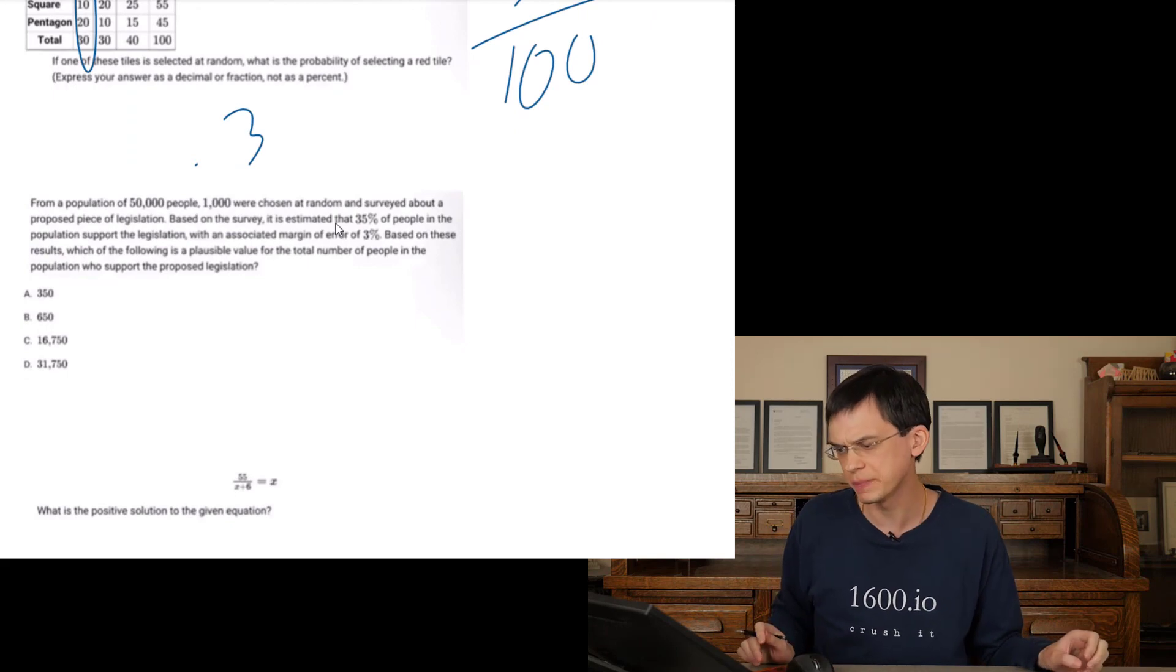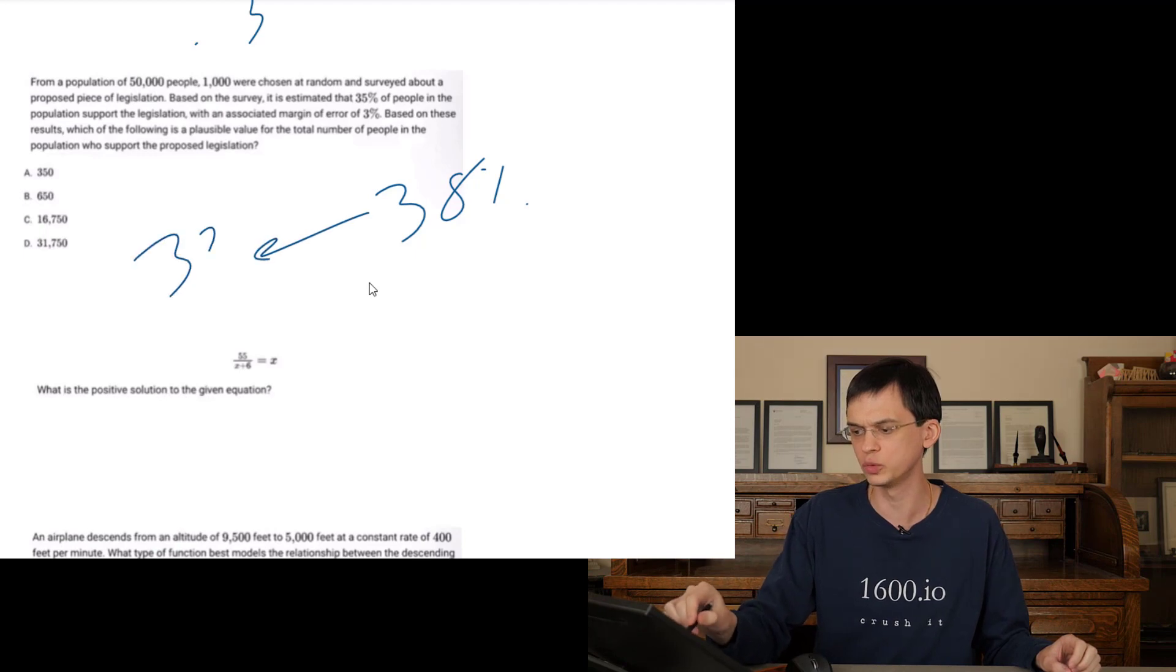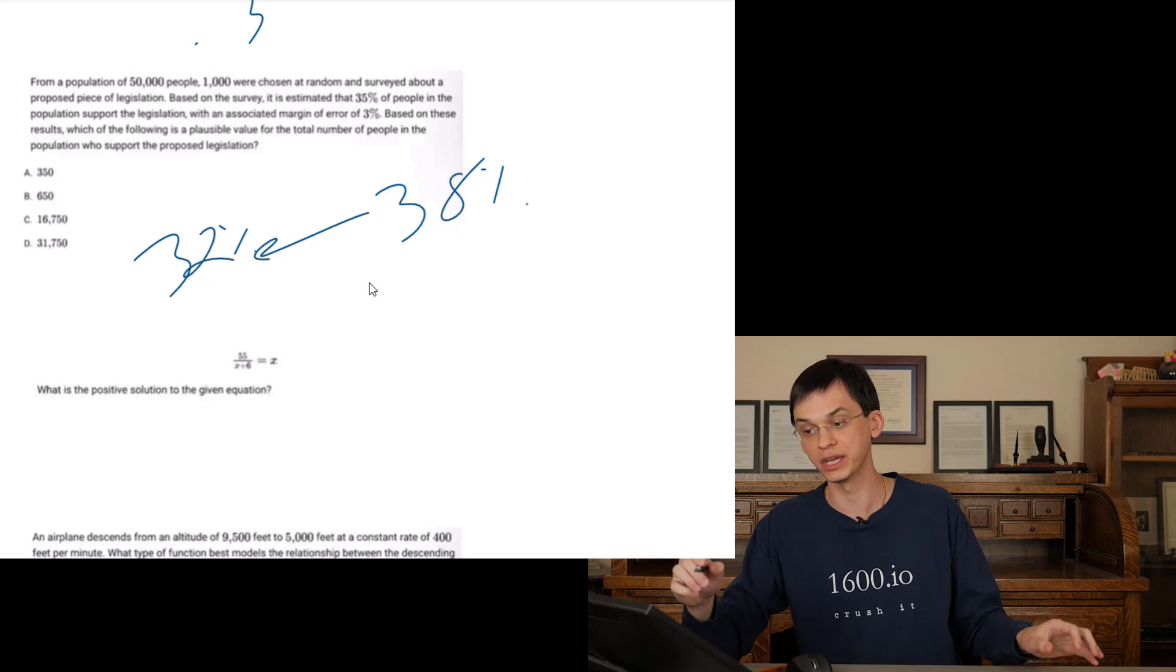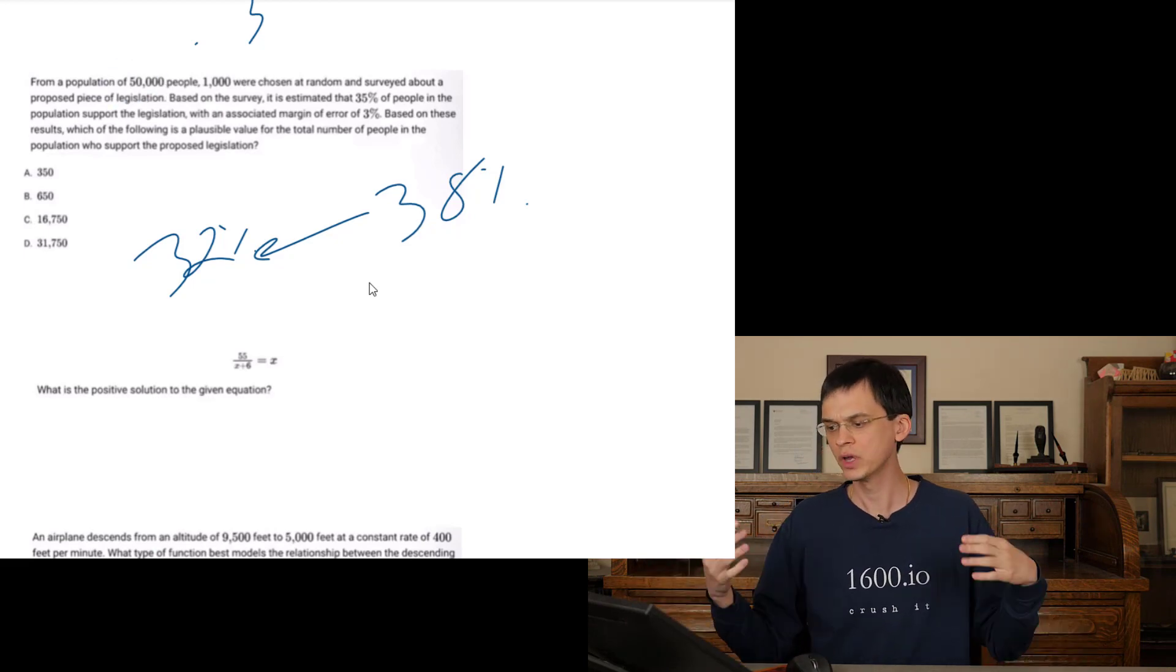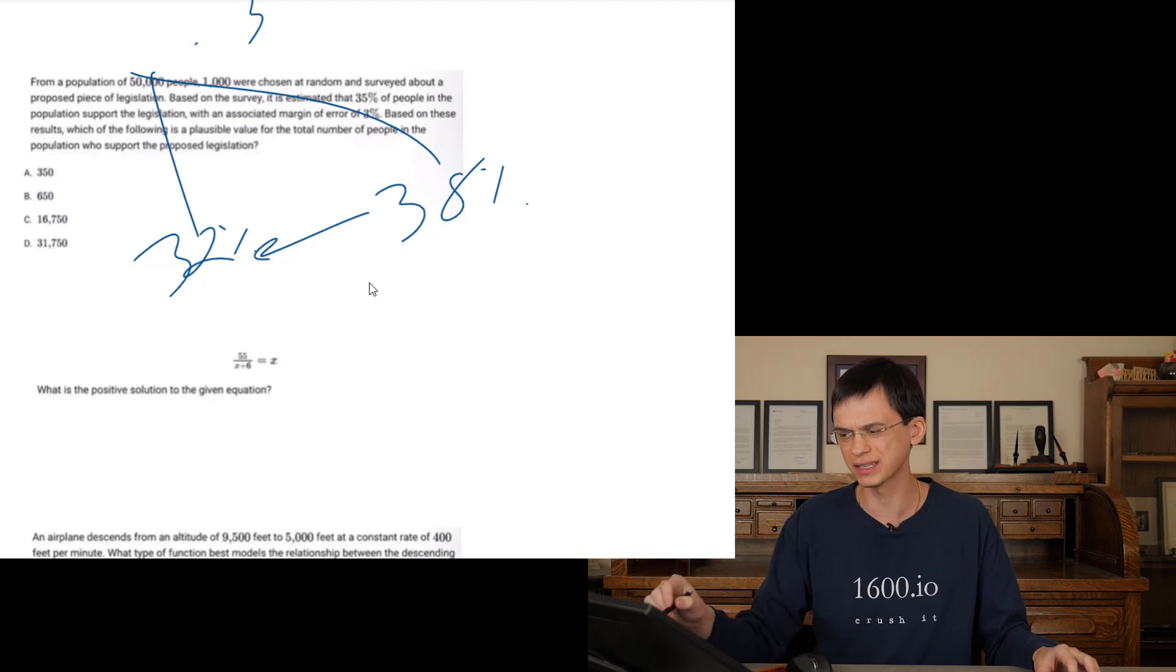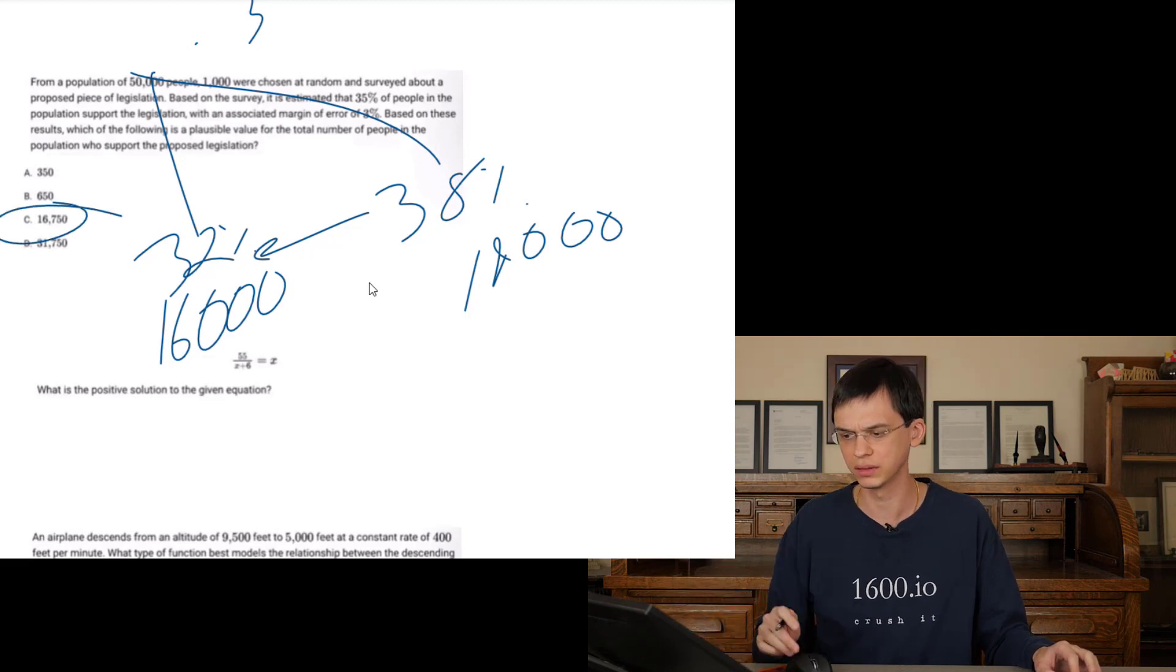From a population of 50,000 people, 1,000 were chosen at random, surveyed. Based on the survey, 35% supported, margin of error 3%. That means that as high as 38% of the people in the population will support it and as low as 32% will support it. So when they're asking what is a plausible value for the total people in the population out of 50,000 who support it, we just need to find 38% of 50,000 and 32% of 50,000. 38% of 50,000 is 19,000. So any number between these, we're the only one to see.